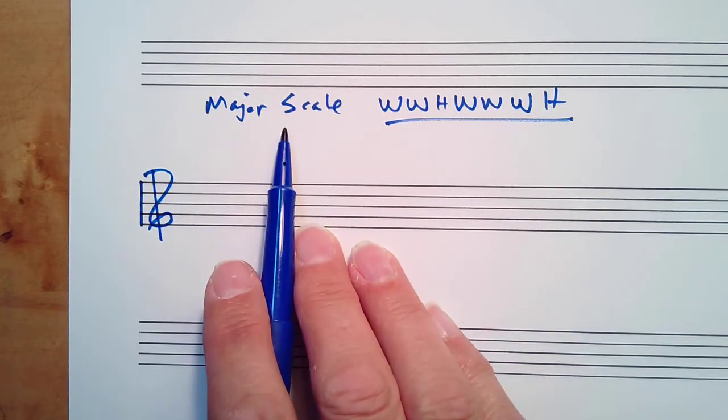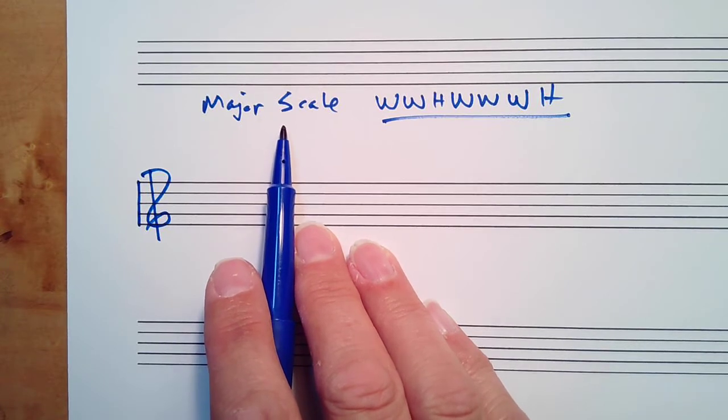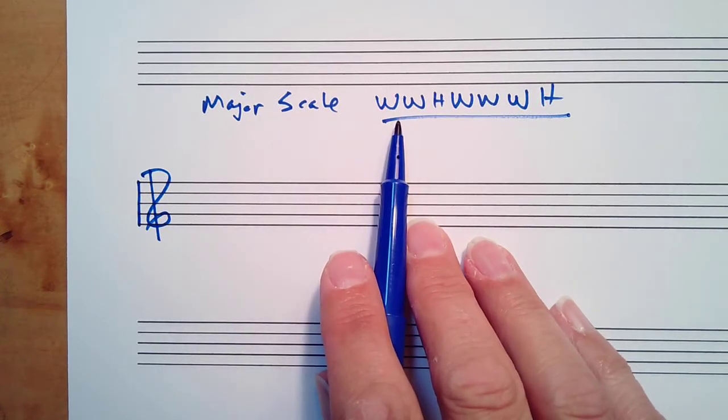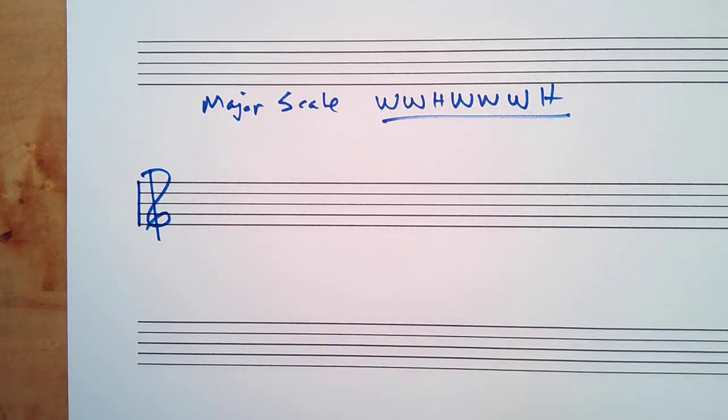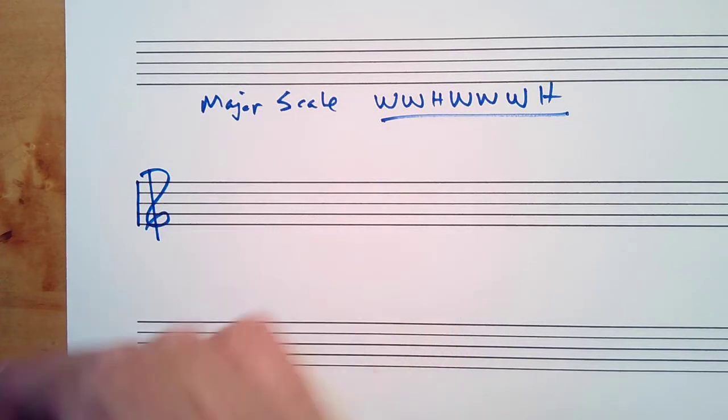This is the major scale whole step half step method. You need to know the order of whole steps and half steps for the major scale, which is whole whole half whole whole whole half. Once you have that, you're ready to build any major scale.